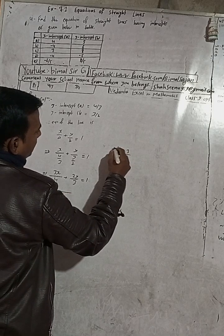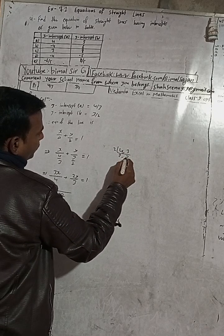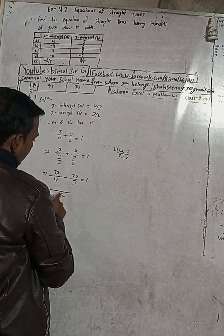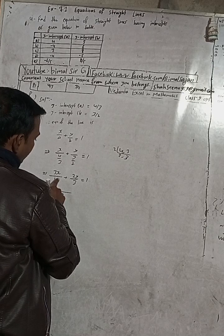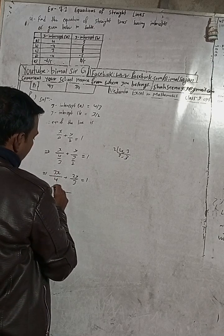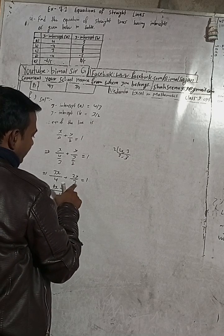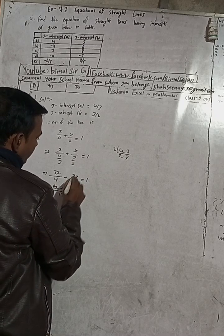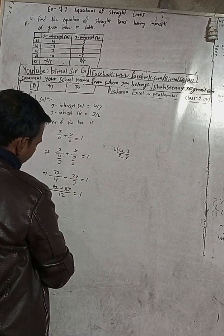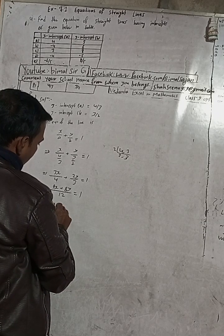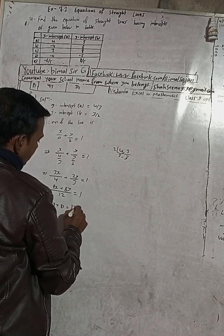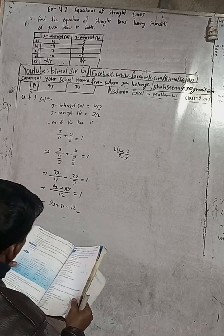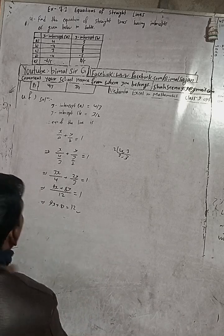Multiply through by 12: 12 divided by 4 is 3, so 3 × 3x = 9x. Then 12 divided by 3 is 4, so 4 × 2y = 8y. Therefore 9x + 8y = 12. This is the required equation. The answer in the book is 9x + 8y = 12 — correct answer.